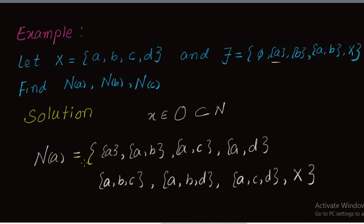In order to find a neighborhood, first find the smallest open set containing the point — here {A,B} — and then find all supersets of this set containing point A: {A,B}, {A,C}, {A,D}, {A,B,C}, {A,B,D}, {A,C,D}, and the ground set X.